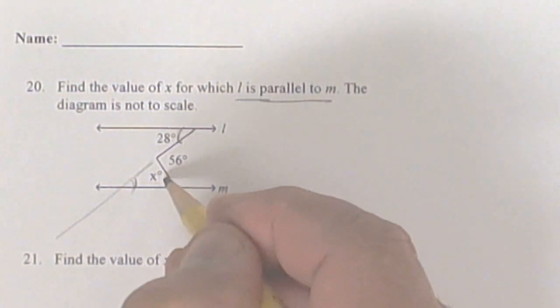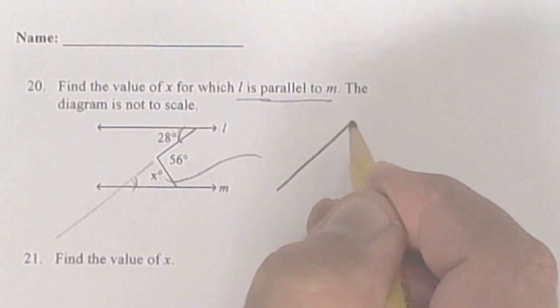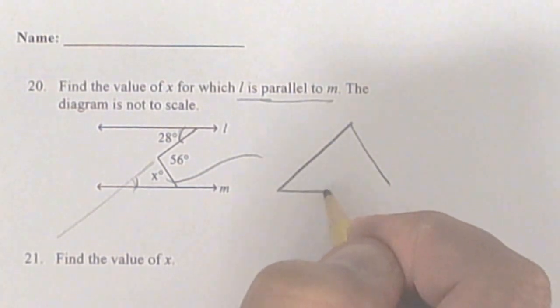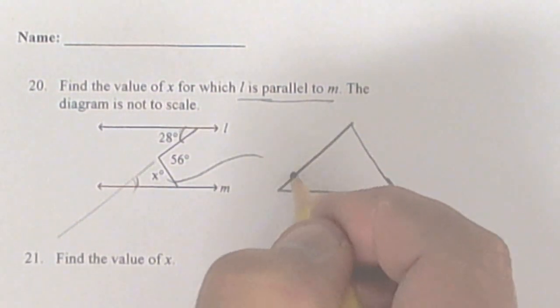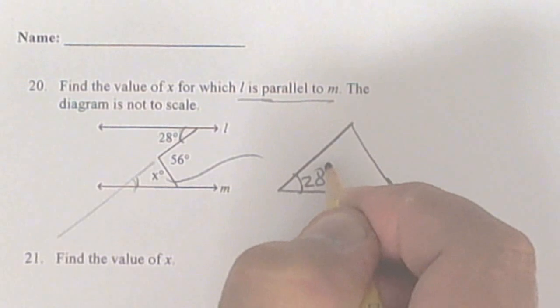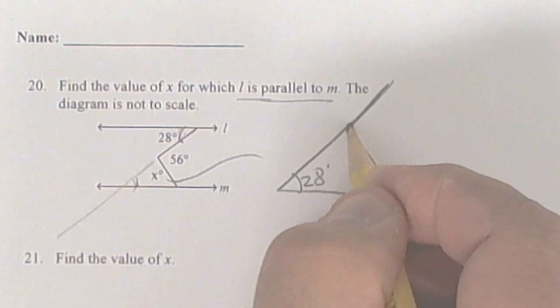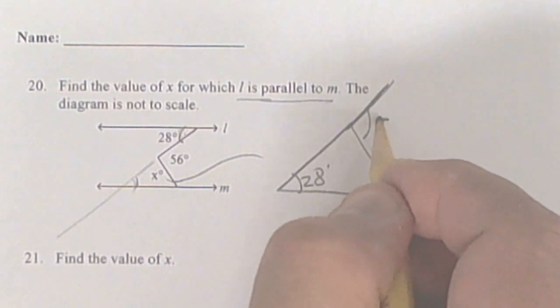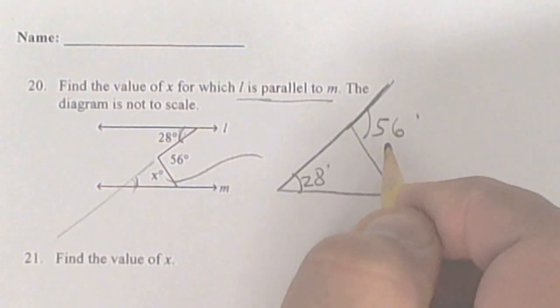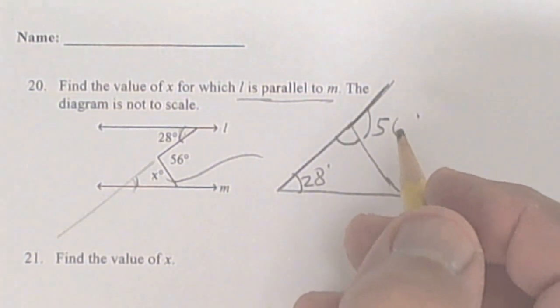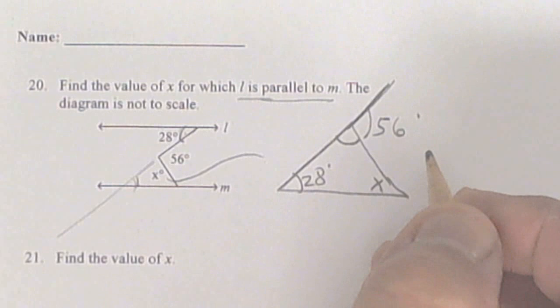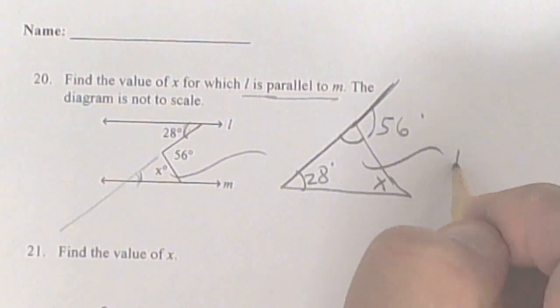So you make that triangle. This triangle right here looks like this, so now you have 28 right here because I flipped it by alternating interior angles. This line right here is 180 degrees, and this piece is 56 degrees. So you're going to subtract from 180 to get this one, and you're looking for x. Every triangle adds up to 180 degrees.